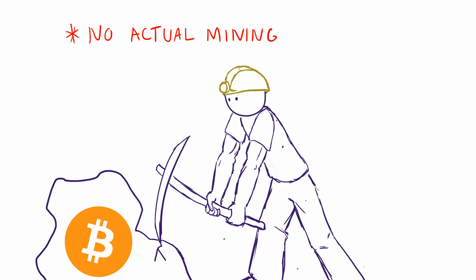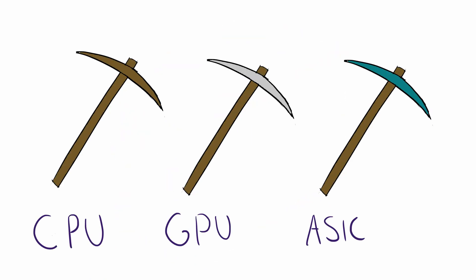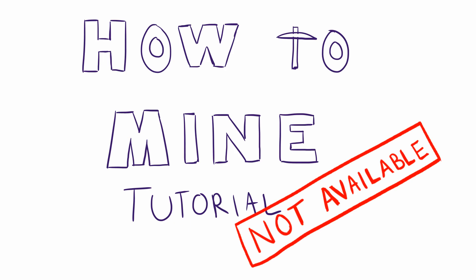To mine cryptocurrency, you'll need a computer and use either CPU, GPU or ASIC to start mining. The most effective method for most people is to use a GPU. I won't get into details on how exactly to start mining, though there are many guides online on how exactly to get started.